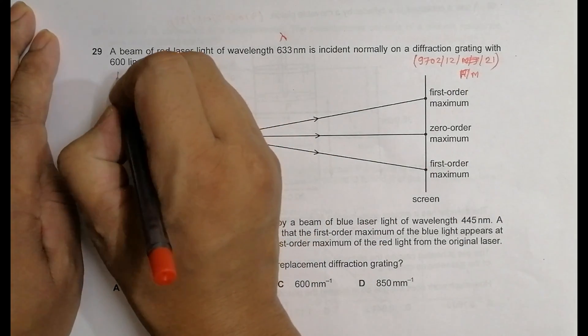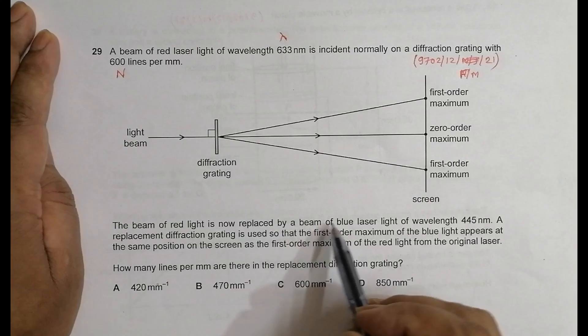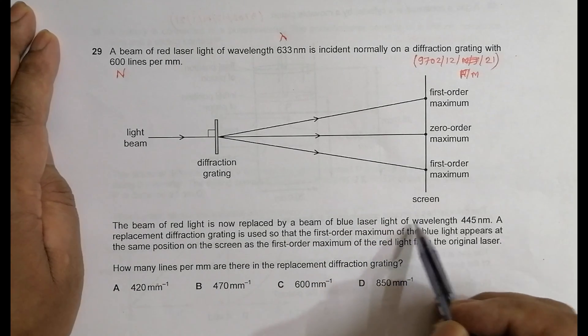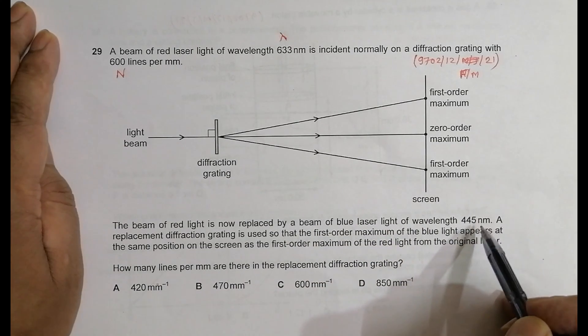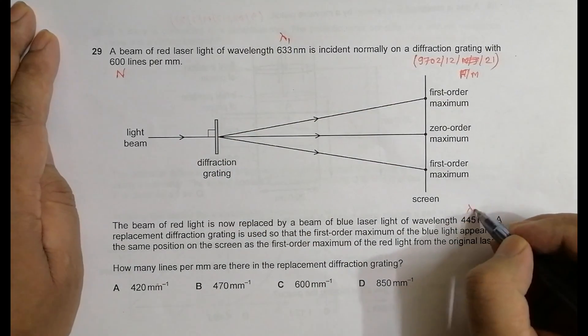So we name it as n. Now the beam of red light is replaced by a beam of blue laser light of this wavelength, so that means we have two wavelengths. I name it as lambda 1 and this is lambda 2.